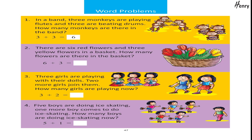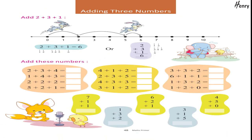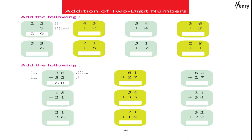Five boys are doing ice skating; one more boy comes to do ice skating — how many boys are doing ice skating now? Five plus one equals... Adding three numbers: add 2 plus 3 plus 1 equals 6. Add these numbers. Addition of two-digit numbers: add the following.